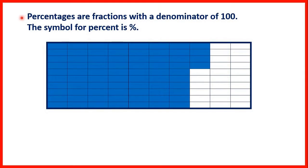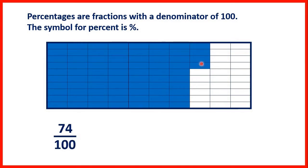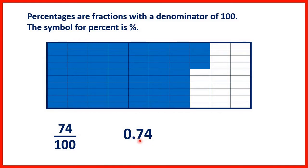Percentages are fractions with a denominator of 100. The symbol for percent is like that. Here we have a fraction bar split into 100 pieces and we can see that 74 of those pieces are shaded. As a fraction we could write what we see as 74 over 100. As a decimal we could write 0.74 because the second digit after the decimal point is the hundredths digit and we have 74 hundredths.